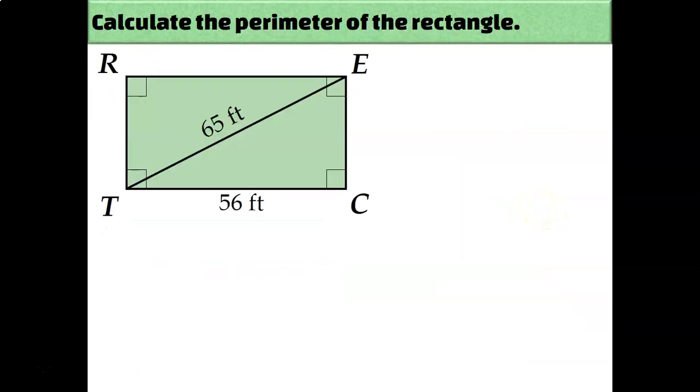We can apply this theorem to solve all kinds of real-world problems, starting with something as simple as calculating the perimeter of a rectangle. Perimeter is the distance around a shape. And on this shape, we only know one of the sides. We know it's 56 feet.